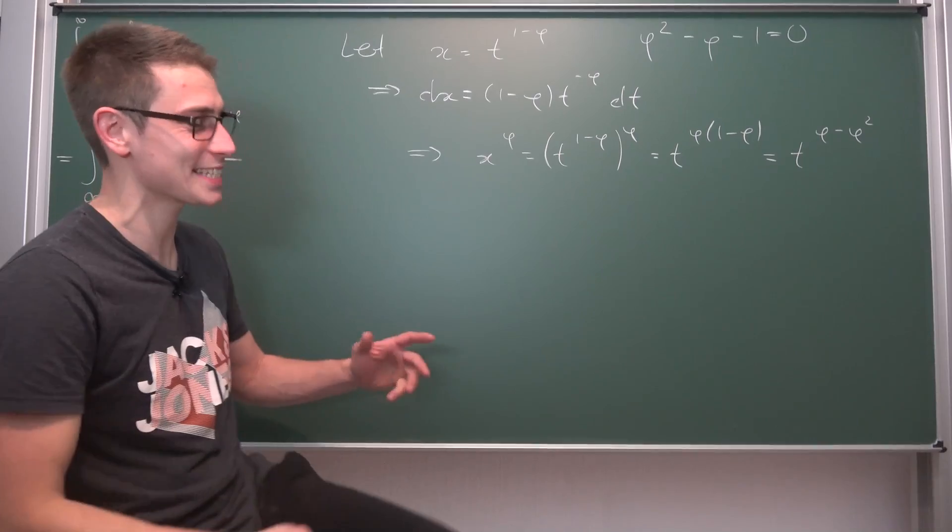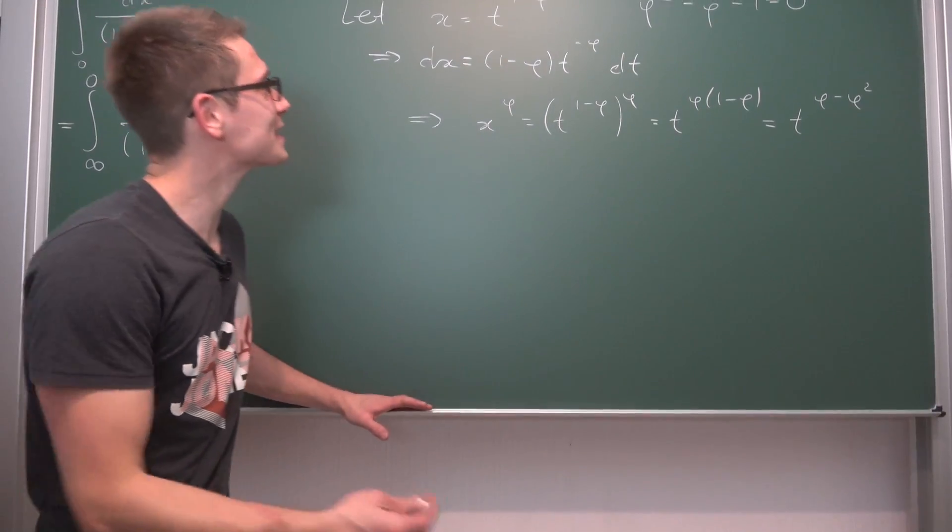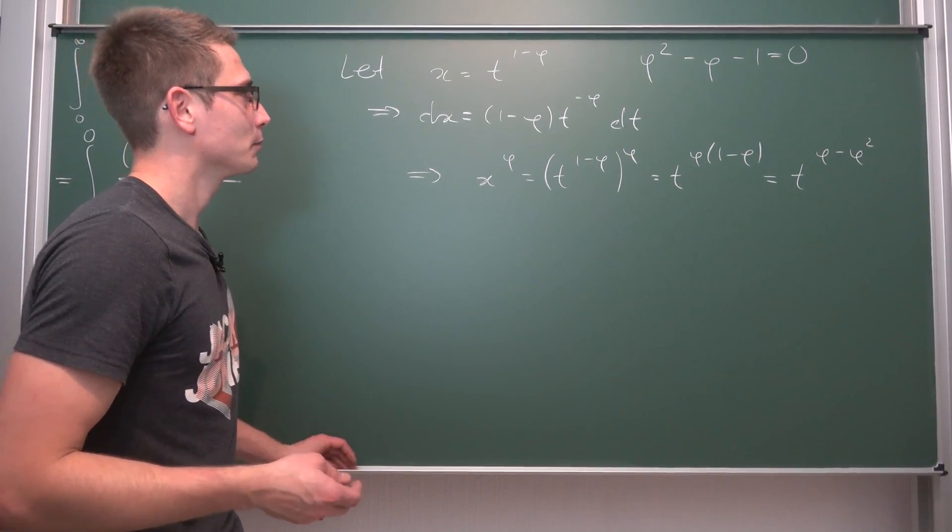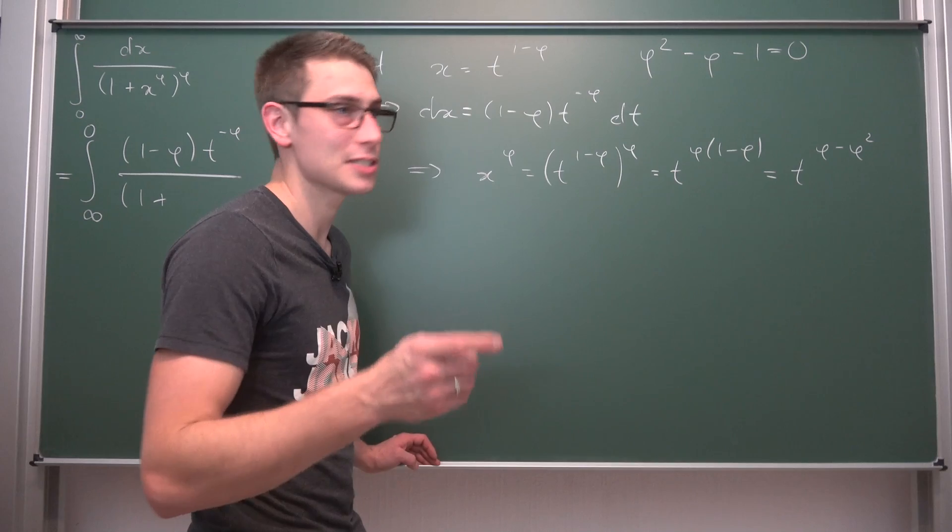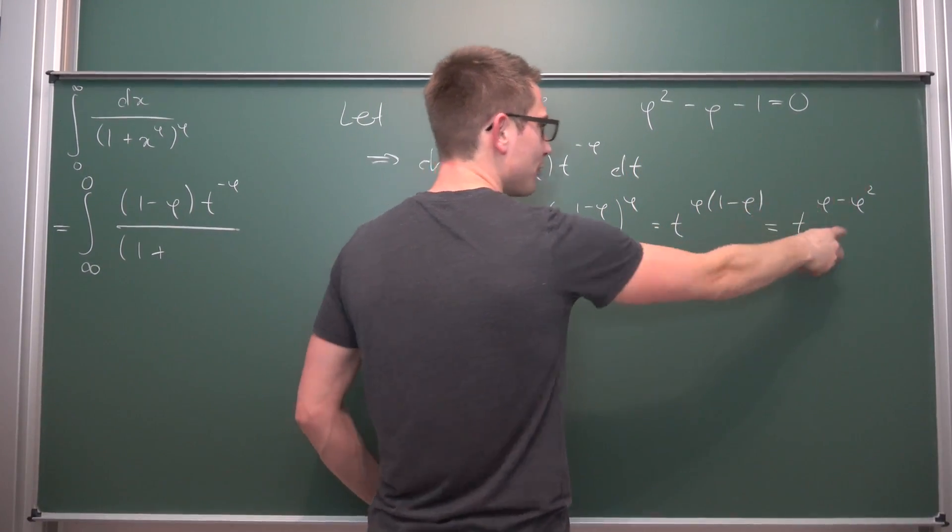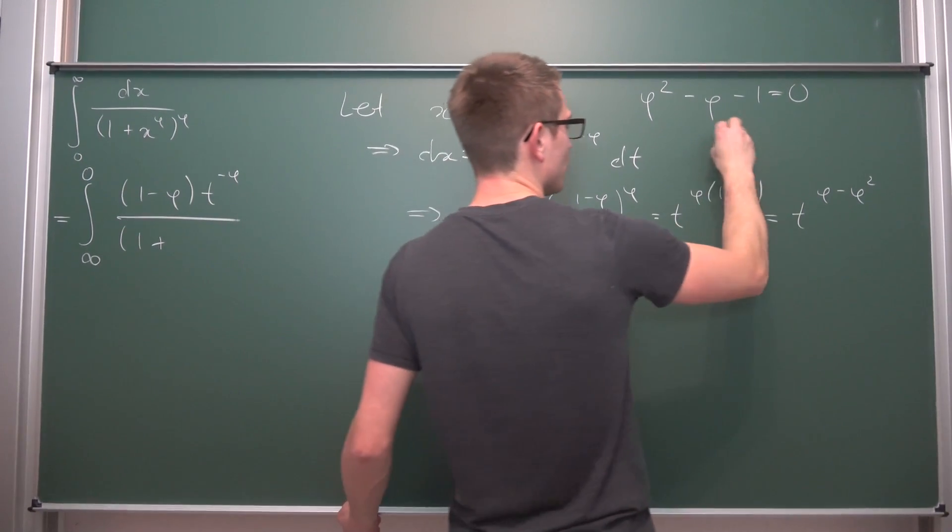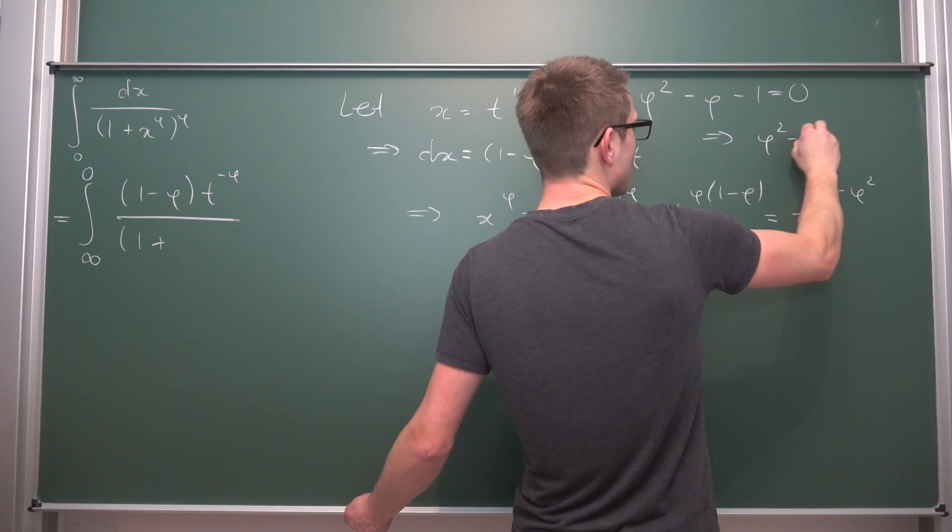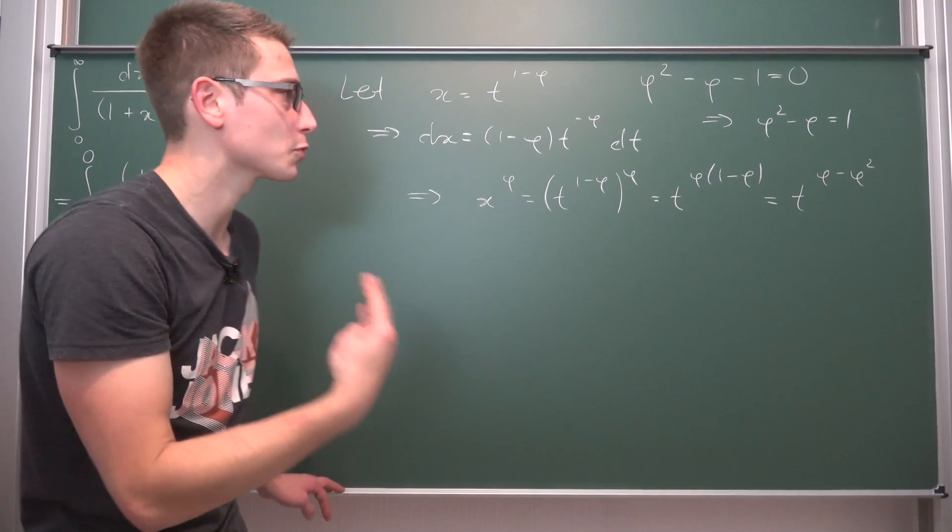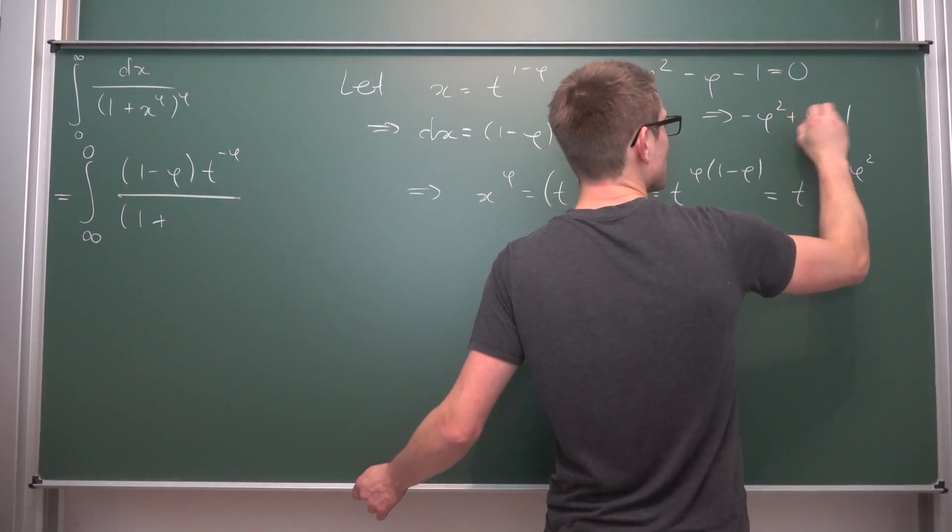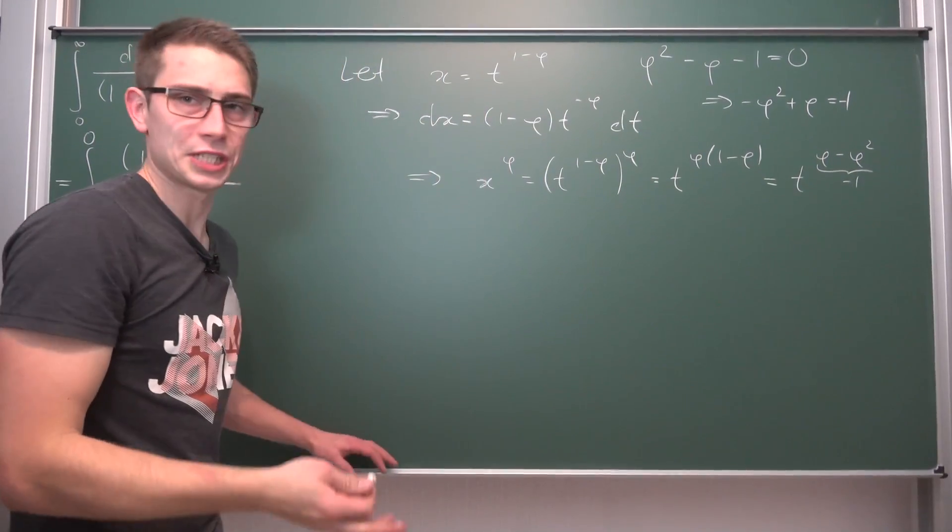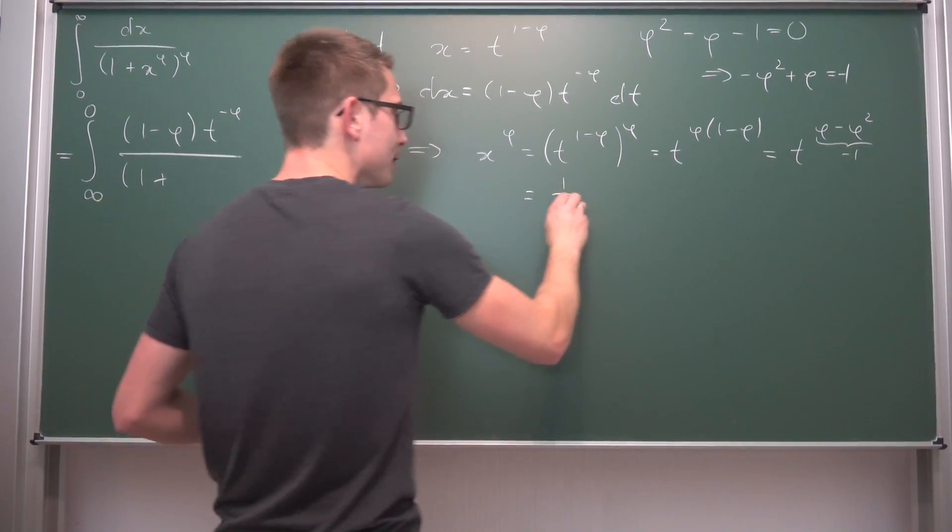This is where the substitution really kicks in. If we take a look at phi squared minus phi, this is the same thing that we got here, only the other way around. If we were to solve this polynomial equation, we get that phi squared minus phi is equal to 1. Or if we change the order around by multiplying both sides by negative 1, we get that negative phi squared plus phi is equal to negative 1. So this thing that we got up here is equal to negative 1, or t to the negative 1 power, which is nothing other than 1 over t.